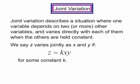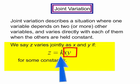In other words, we say z varies jointly as x and y if z is equal to k times x times y for some constant k.